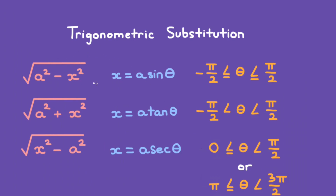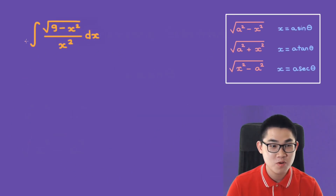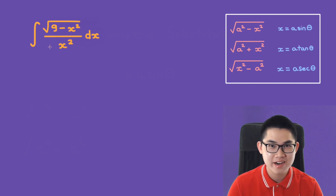When using the first form, the assumption is that theta is between negative π/2 and positive π/2, and so on. But don't worry too much about this — these are the ones that you need to know. Our first example will be the integral of the square root of 9 minus x² over x² dx.